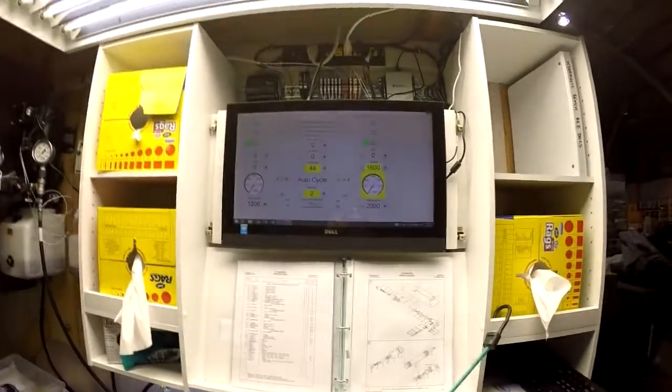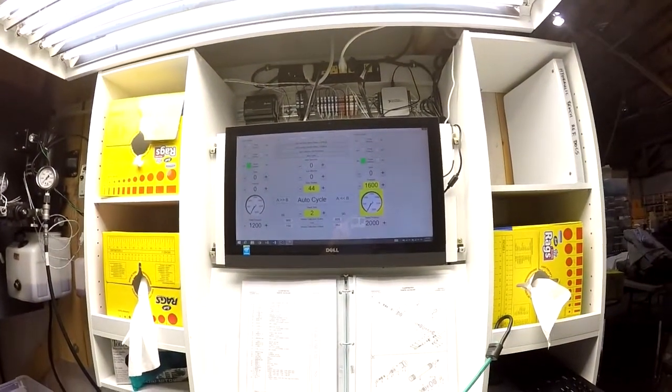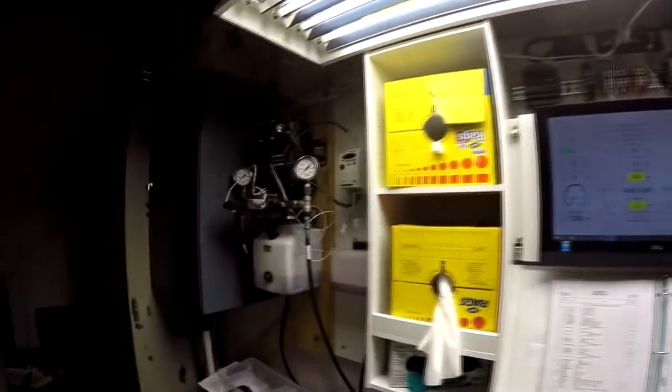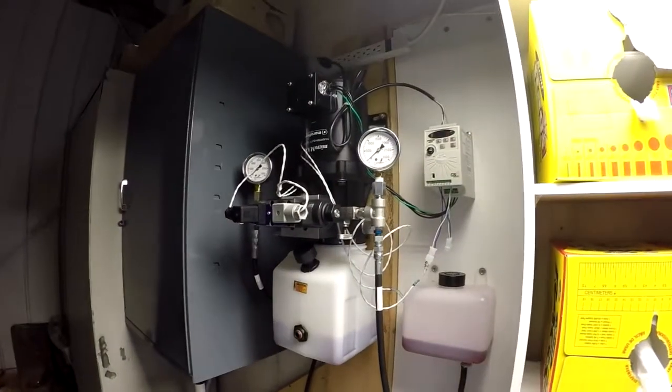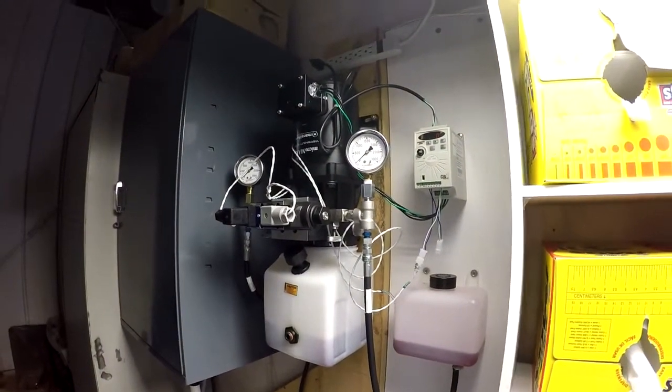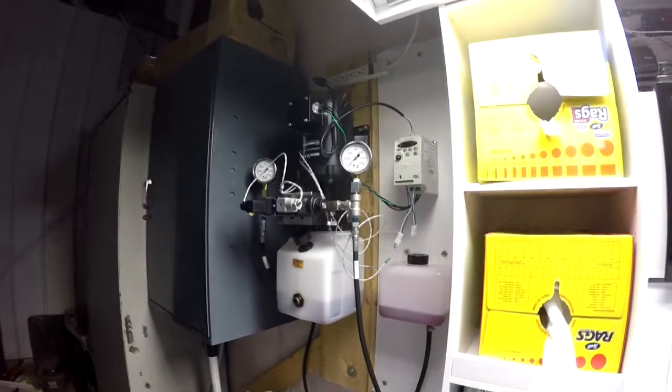Up at the top here we have the controls and software used to run the bench. Over here you see the power pack, a big brother version of what's in the tail cone of your airplane.